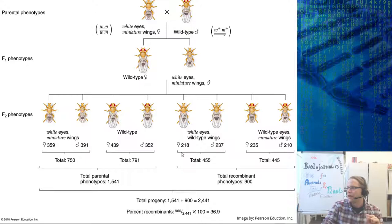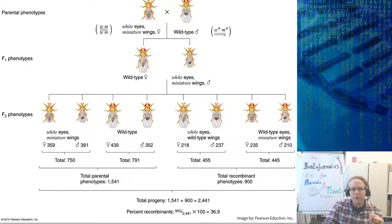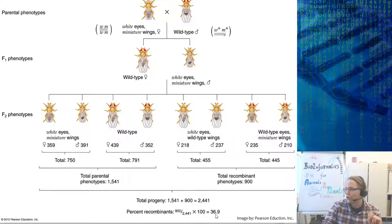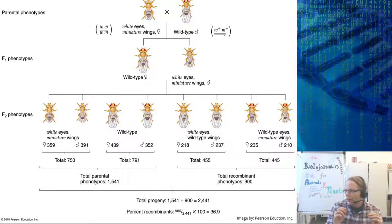From this experiment, out of 2441 total offspring, 900 have been recombinated. The idea was that if you calculate the ratio of recombinants versus the total number of individuals, you get a kind of distance measure — how far these two genes are apart. Calculated as a percentage, they are 36.9% away from each other. So the distance on the X chromosome between the eye phenotype and the wing phenotype is 36.9 centimorgans.